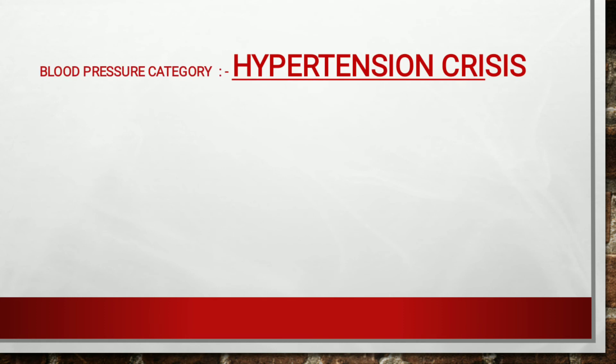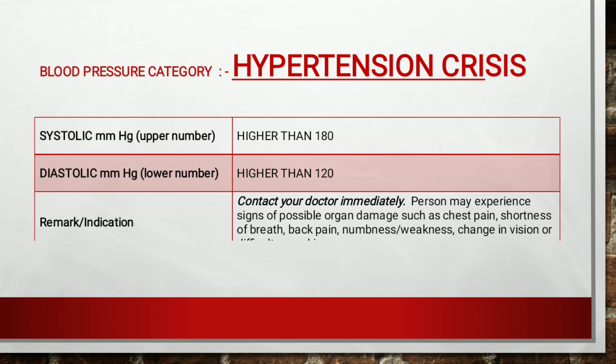The next category is hypertensive crisis. Here the systolic is higher than 180 mmHg, whereas diastolic is higher than 120 mmHg. The individual should immediately contact a physician, as they may experience signs of possible organ damage such as chest pain, shortness of breath, back pain, numbness, weakness, change in vision, or difficulty in speaking. Therefore, they should contact a physician immediately.